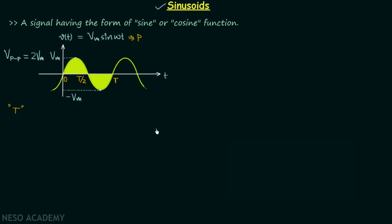If I shift the entire signal waveform towards the left by an integer multiple of the fundamental time period, we will have a new signal V(t + nT), and this signal will be the same as our initial signal V(t). Because we have the same structure repeating infinite times from minus infinity to plus infinity, shifting the signal towards the left by nT will not change the signal waveform. You may follow the periodic signals lectures in signals and systems for more understanding. nT is a period because the signal will repeat itself after a duration equal to nT.